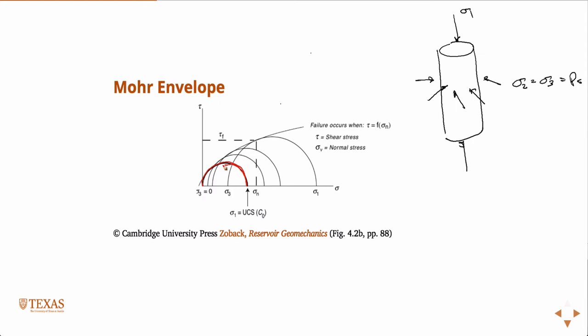Then you can go on and construct, varying sigma 1 and sigma 3, continuing to do that, and drawing all the Mohr circles. And then from that, if you remember, the state of stress is always inside this circle.